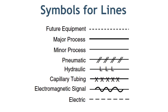This is how various lines and connections are shown on PFD and PNID. Main process lines are shown as a dark black line, whereas minor lines are shown as thin black lines. You can see the symbols for pneumatic, hydraulic, and capillary lines also. Electric signals are shown as a dotted line and electromagnetic signals are shown as a wave on the solid line.